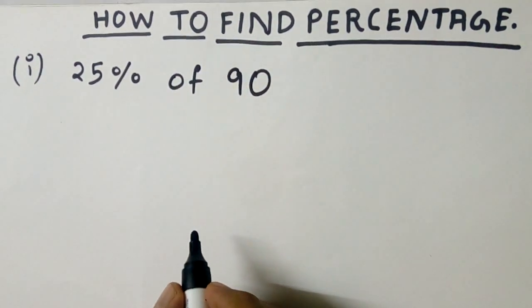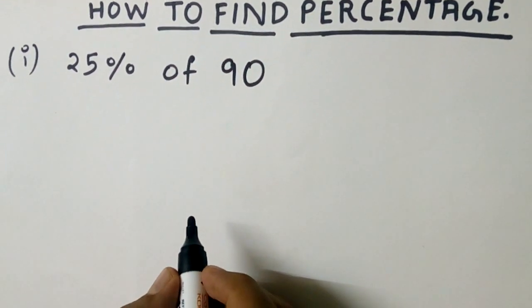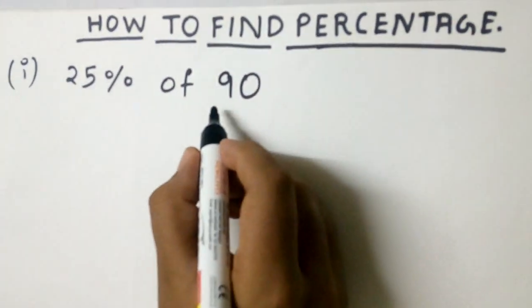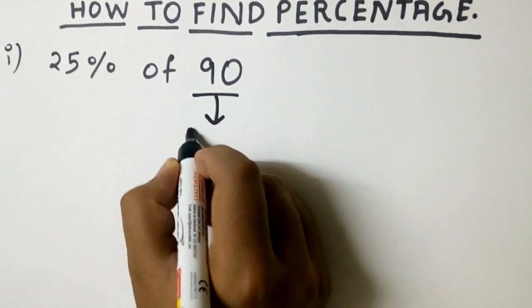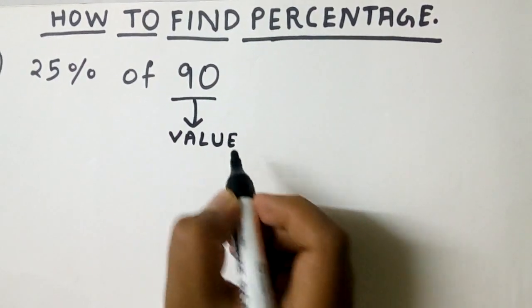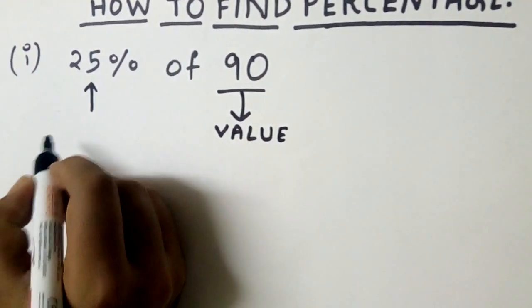Whenever we are given this type of sum, we will first divide it into two parts. The first one will be the value, and the second one will be the percentage.